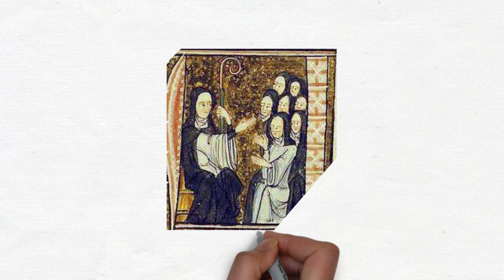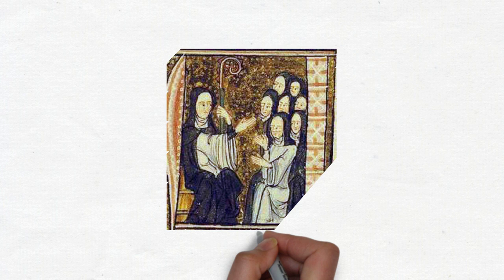Hildegard is the oldest composer we know a lot about. While we know of music that's older, we know little about who wrote them. Sometimes we don't even know who the composer was. Hildegard's the first composer we could learn about as a complete person, rather than a mysterious name.